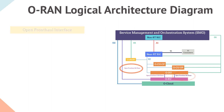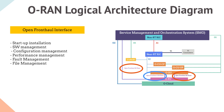Next is the open fronthaul interface. The M-plane interface is from ORU towards ODU and SMO, as shown in this diagram. The open fronthaul CUS interface is between ORU and ODU only, where CUS stands for control, user and synchronization.